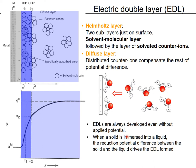An important point: electric double layers are always present, even without any applied potential and even without any Faradaic reactions. When a solid is immersed in a liquid, the reduction potential difference between the solid and the liquid drives electric double layer formation. So you always find an electric double layer on the surface of electrodes, even without applied potential or Faradaic reactions.